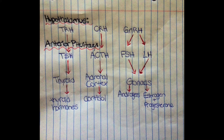Neurons in the hypothalamus cause it to secrete a number of releasing and inhibiting hormones, three of which are shown here. First, we'll look at thyrotropin-releasing hormone, which causes the anterior pituitary to secrete thyroid-stimulating hormone, which lastly travels to the thyroid where thyroid hormone is released and performs its functions, such as maintaining blood pressure and increasing metabolism.